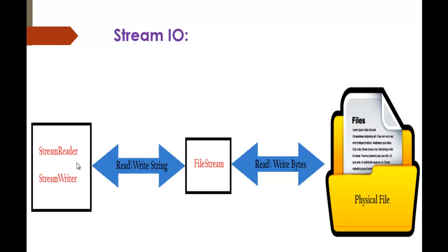If I want to write something to a physical file, using StreamWriter I will pass a string — that string will be converted into bytes with the help of StreamWriter, and those bytes will be passed to FileStream, and FileStream will take those bytes and write them into the physical file. For reading, FileStream reads the content present in the file, converts it into bytes, and those bytes are given to StreamReader, which converts the bytes back into a string.